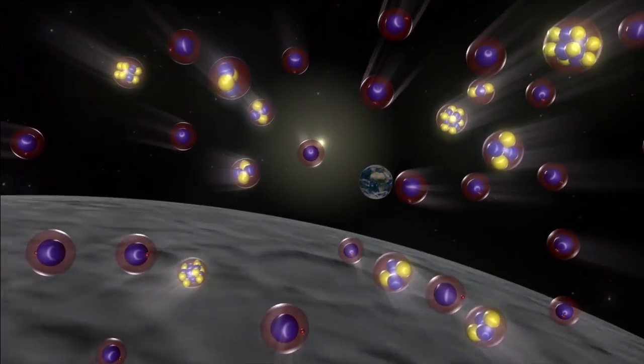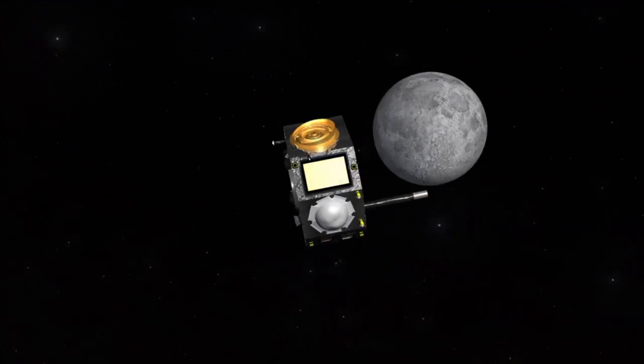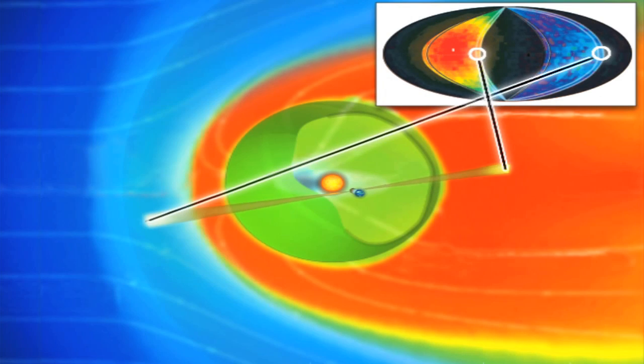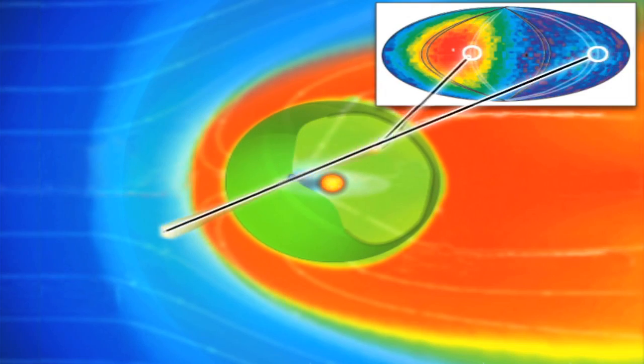IBEX is also different because it makes its images from particles instead of light. Over the course of six months and many orbits, IBEX can paint a picture of the entire sky in energetic neutral atoms, or ENAs for short.